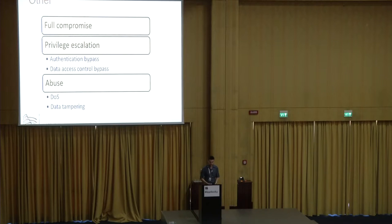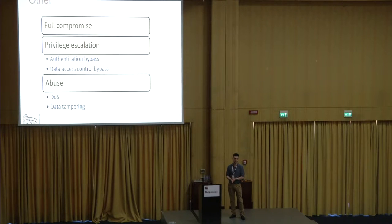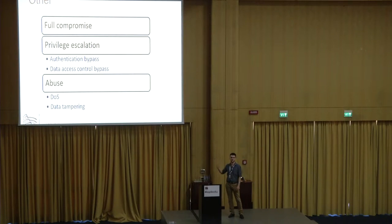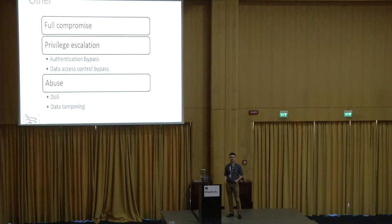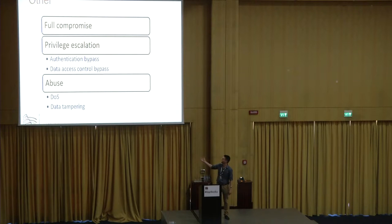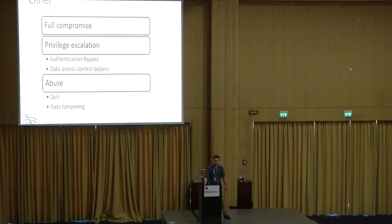We can go for a full compromise like code execution on big data servers, but that's not the main point. Remote code execution vulnerabilities are critical, but a simple information disclosure or data access control bypass — privilege escalation in a big data solution — is already critical, because big data consists of a lot of sensitive data. A denial of service can be as critical as code execution, and if we can tamper the data, that's critical too.